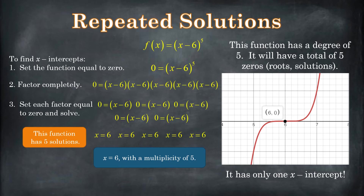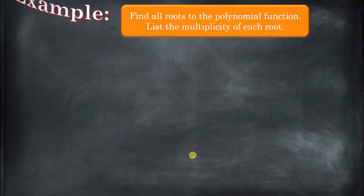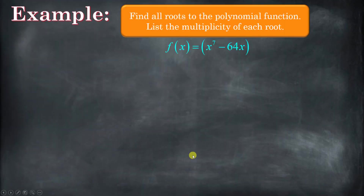If we have a unique solution — like x equals 3, and it's the only time x equals 3 — then that has a multiplicity of 1. Let's see another example that combines a lot of the skills you're learning with polynomials.